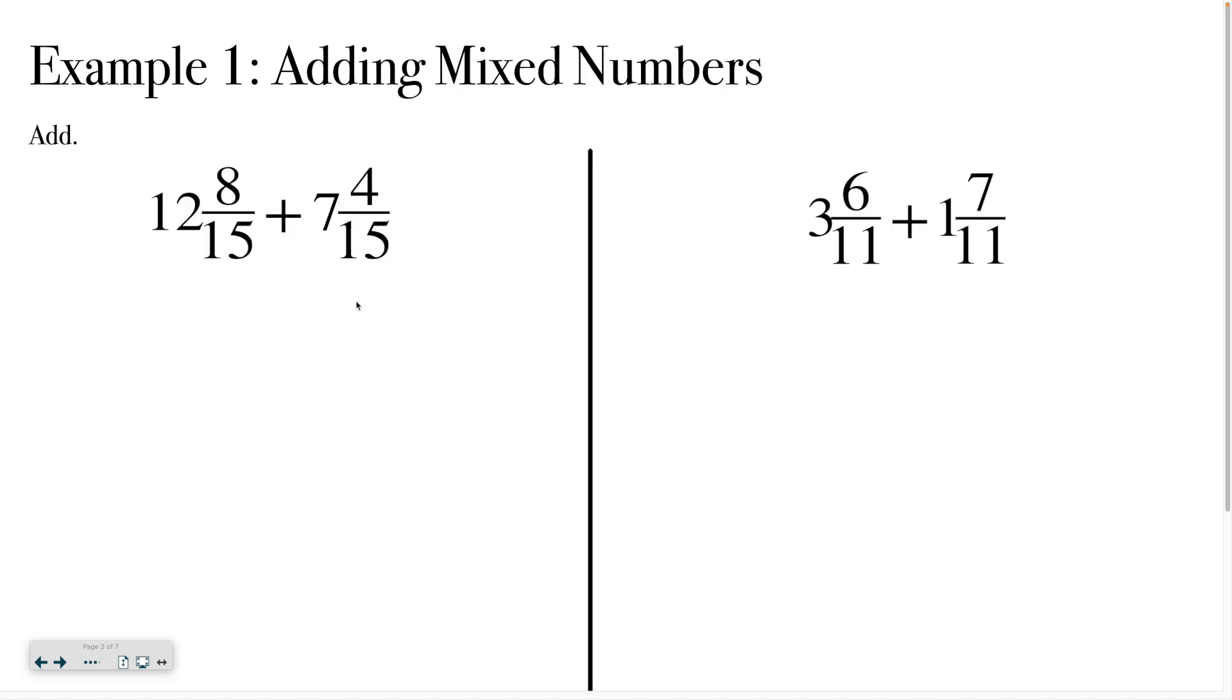All right, but what about when we have something a little more complicated? We have mixed numbers. So mixed numbers are where you have the whole number and the fraction put together. And there are a couple different ways you can handle this. So you could take your whole numbers and write them together. And you can take your fractions and write them together. So you're just kind of regrouping these. And that's totally okay. So 12 plus 7 gives me 19. And then 8 fifteenths plus 4 fifteenths. I know I have that 15 on the bottom. And then 8 plus 4 is 12. And I want to simplify that. 12 fifteenths. I know that both of those numbers are divisible by 3. So 12 divided by 3 is going to give me 4. 15 divided by 3 is going to give me 5. So my final answer is going to be 19 and 4 fifths.